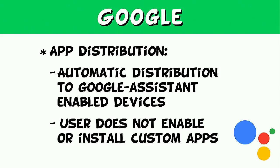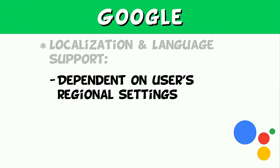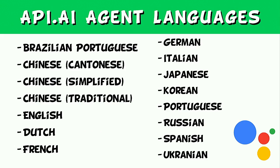These apps will work with the Google Home device and any Google Assistant-enabled device. App distribution is different than Alexa's — it's automatically distributed to Google Assistant-enabled devices. The user doesn't have to install or enable a specific app; it's just automatically pushed out to any relevant user. The localization and language support is dependent on the user's regional settings. There's a lot of discussion in the forums about not being able to use Google Assistant in more than one language or region. But if you use API.AI to build your agent, then 15 languages are supported, which is potentially a lot broader than Alexa.